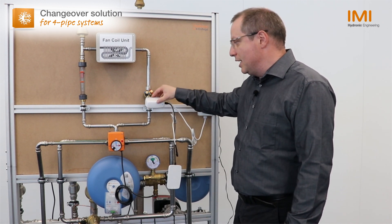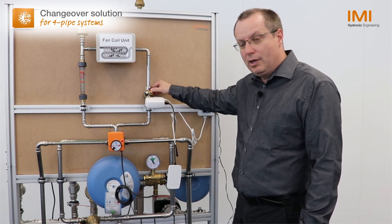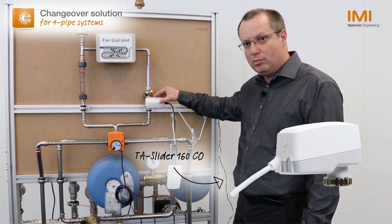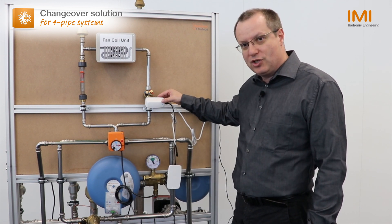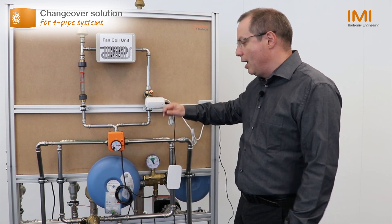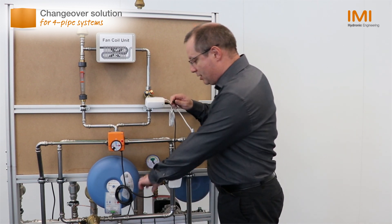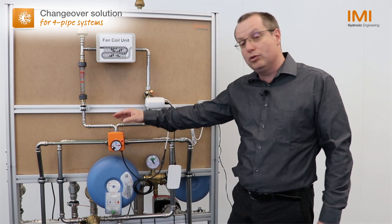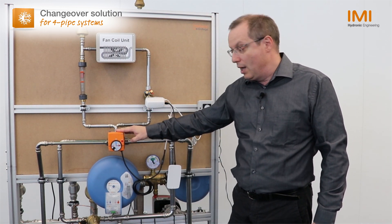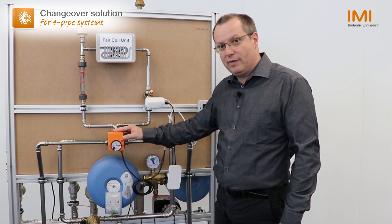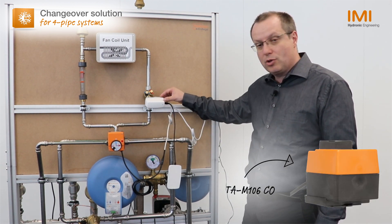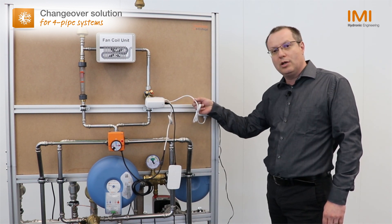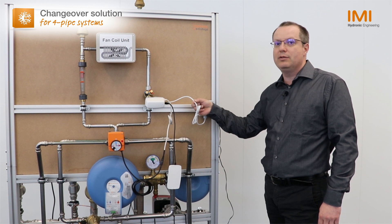Then, as an actuator for the TA modulator, the digitally configurable TA Slider 160CO. This version, especially made for changeover systems, integrates an easy-to-use click-and-connect feature that allows straightforward connection to the motorization of the six-way valve. This actuator on the six-way valve is integrally controlled by the TA Slider 160CO, which is itself connected to the control system through only three wires.